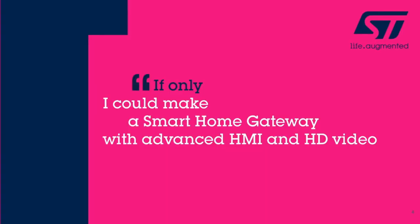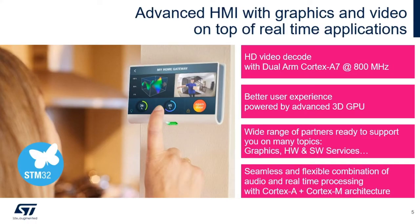Now that you have an idea of the STM32 MP1 architecture, let's look at some possible applications. Perhaps you are designing an advanced gateway product — maybe a gateway used for home security, HVAC control, or home automation. The STM32 MP1 can address the critical features needed for these applications. With the dual Cortex-A7s clocked at 800 MHz, the STM32 MP1 can support 720p HD video decode. When using the STM32 MP157 with the optional 3D graphics core enabled, you can implement a high-performance user interface. The heterogeneous architecture with both Cortex-A and Cortex-M cores provides flexibility for applications including audio, voice, and other real-time processing.